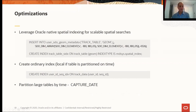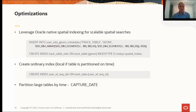For optimizations, leverage Oracle's native spatial indexing for scalable spatial searches. The API comes with sample data, a simple data model, a sample Apex application, and scripts to create the tracking data table with these indexes. You can also create ordinary indexes — for example, on user ID and sequence. For large tracking datasets, leverage other key scalable features of the database like partitioning by time. The key point is that all spatial features, including this one, leverage the scalable and manageability features of the Oracle database.